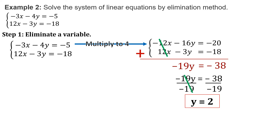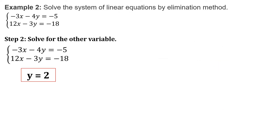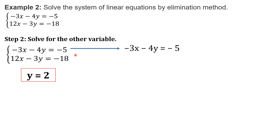Since we already have the value of one of the two variables, we may proceed to step 2. Let us solve for the other variable using the value we obtained for y. You may use any of these two equations. I want to use equation 1 since it has lesser values compared to the second equation. From here, we will change the variable y into positive 2. So, we'll have negative 4 times 2. Bring down negative 3x and negative 5. 4 times 2 will give us negative 8.